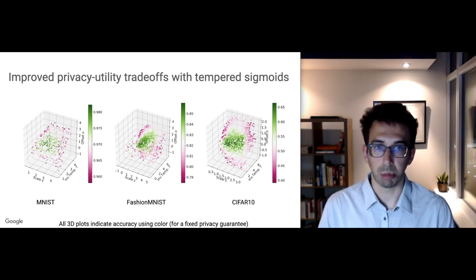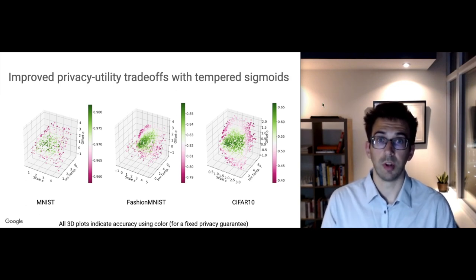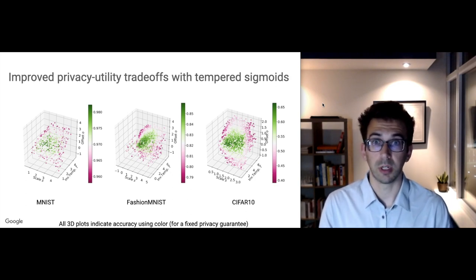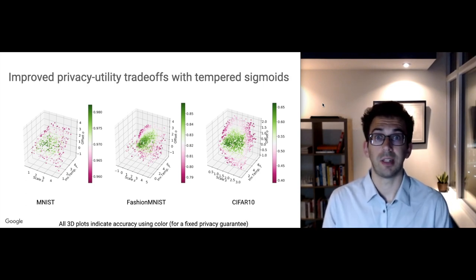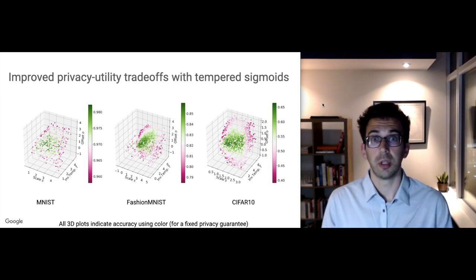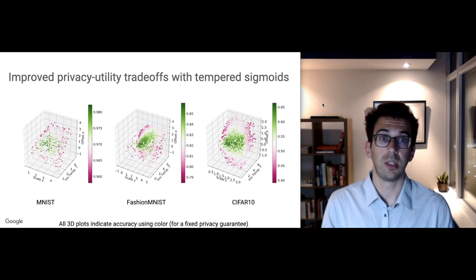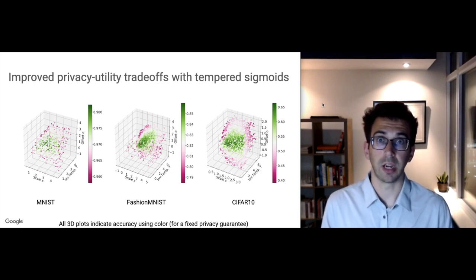If we compare these models with the same architecture trained also with differentially private stochastic gradient descent, but this time with ReLU activation functions, it is very clear that tempered sigmoids significantly outperform models that were trained with ReLU on these three datasets. On MNIST, the best tempered sigmoid model achieves 98.1% test accuracy, whereas the baseline ReLU model trained with identical privacy guarantees achieved only 96.6% accuracy. On Fashion MNIST, we achieve a best performing model of 86% with tempered sigmoids in comparison with 81.9% with ReLUs, and on CIFAR-10, we achieve 66% test accuracy with tempered sigmoids compared to 61.6% accuracy with ReLUs.